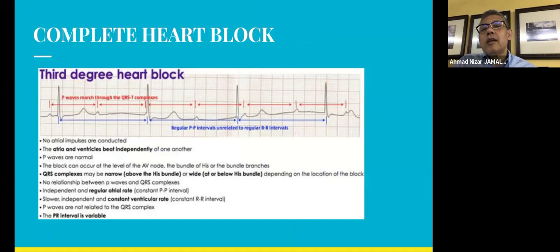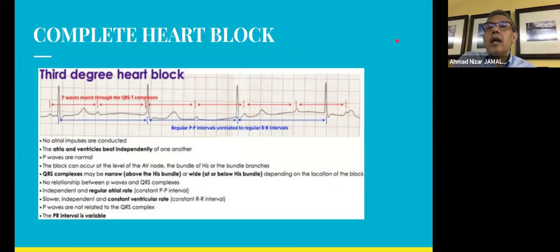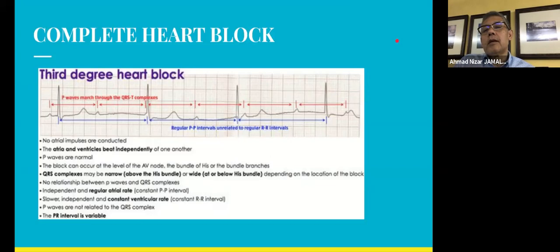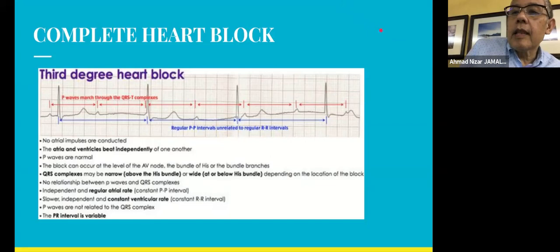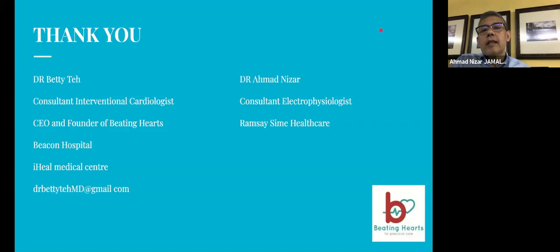Third-degree (complete) heart block: there is no association between the atrium and the ventricle — they beat independently. The atrial rate is regular at about 70–80 bpm while the ventricular rate is about 40 bpm or lower. The PR interval is variable with no fixed pattern. We end here on ECG recognition for our first session; sick sinus syndrome ECG will be shared next time.